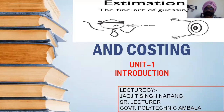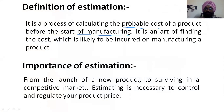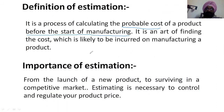Hello friends, today we are going to have a first lecture on estimation and costing. The first unit is introduction to estimation. Estimation is the fine art of guessing — guessing where we have to hit the target. Definition-wise, it is a process of calculating the probable cost of a product before the start of manufacturing. It is the art of finding the cost which is likely to be incurred on manufacturing a product.